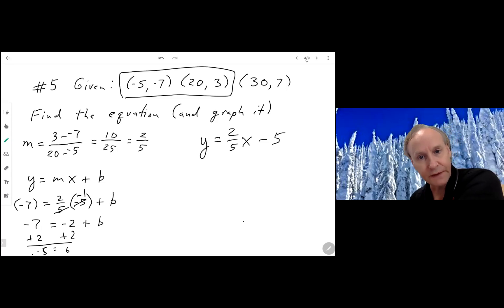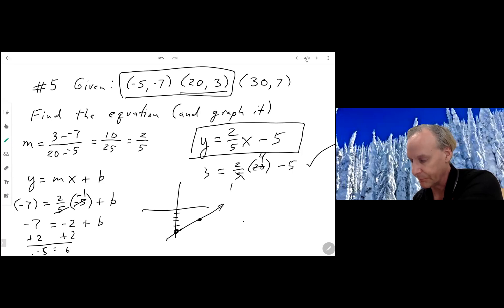So my equation is y equals 2 fifths x minus 5. Now, there's a good way to check these. You can substitute in the other points. For example, 20, 3. Let's make sure that's actually true. 2 fifths of 20 minus 5 should equal 3. The 5 cancels with the 20 to give us 4. That's 8 minus 5 equals 3. And sure enough, it's true. There's my equation. And you should be able to graph this. You just graph it at 0, negative 5, and then count your slope up 2 and over 5. And you draw your line. A little practice goes a long way.